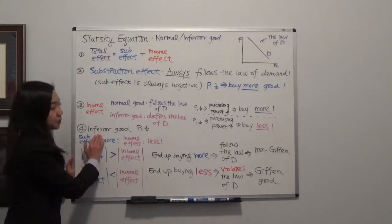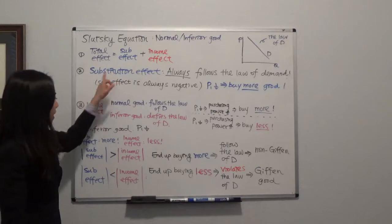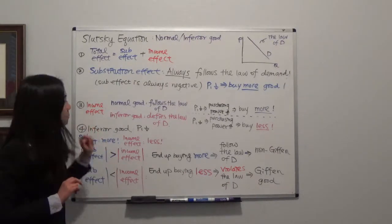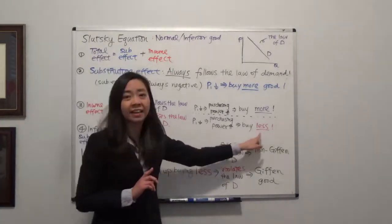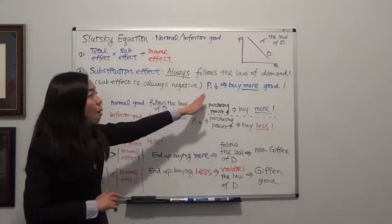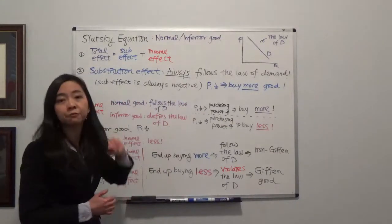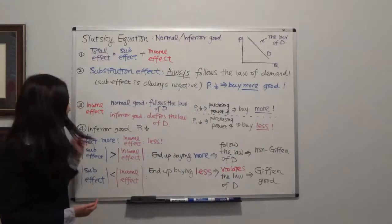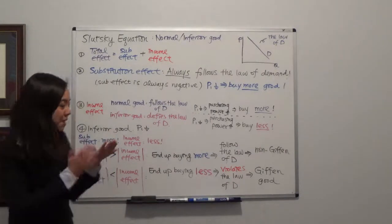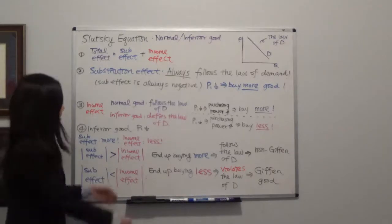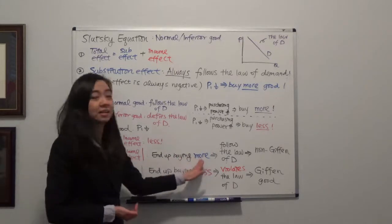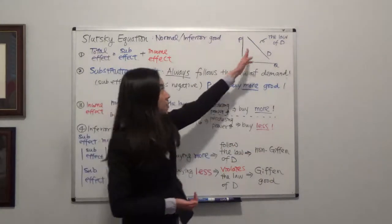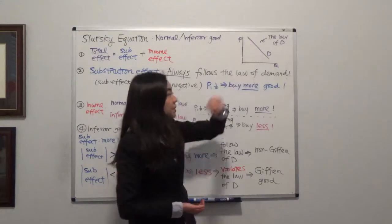When we have an inferior good, substitution effect and income effect whisper two different things. If the good is inferior, income effect tells you the price goes down so you should buy less, but substitution effect always follows the law of demand and tells you to buy more. The question is who has a louder voice. If the substitution effect's magnitude is bigger than the income effect's magnitude, you end up buying more, following the law of demand. The good is then a non-Giffen good — it still follows the law of demand and the demand curve slope is still negative.